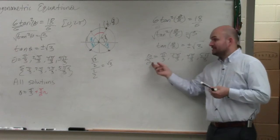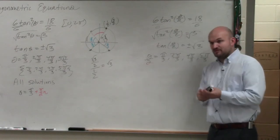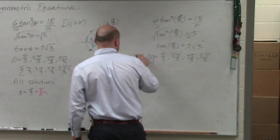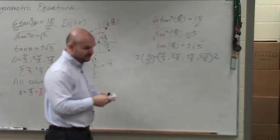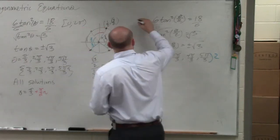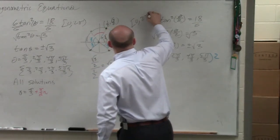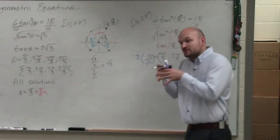So now, we need to undo our angle divided by 2. So we need to multiply by 2. Therefore, my solution set - and I'm sorry guys, this is also in between 0 and 2 pi. That is our restriction.